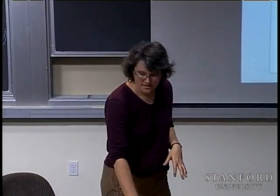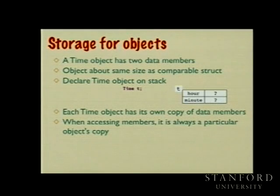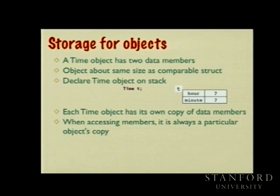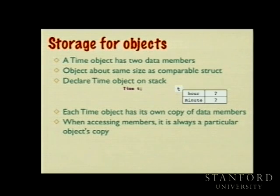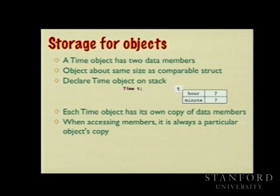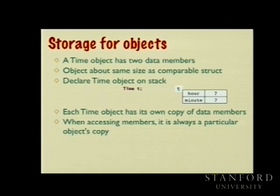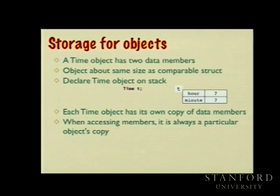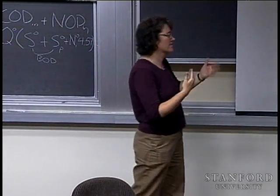The time object I declared has two data members: integer hour and integer minute. Mechanically, the object is about the same size as the equivalent struct — it has fields for hour and minute but doesn't carry storage for the member functions since those are shared across all time instances. When you say 'time t', you get space for an hour and minute field. By default those fields are uninitialized, just as they would be if you declared 'int hour; int minute;' on the stack — no automatic zeroing for primitive types.